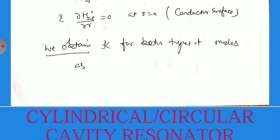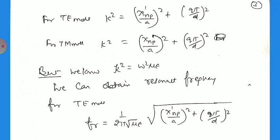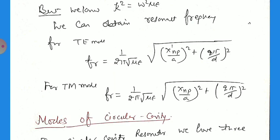We can obtain k for both types of modes. For the TE mode we can write k² equals (x'np/a)² plus (q pi/d)². For the TM mode, k² equals (xnp/a)² plus (q pi/d)². We know that k² equals omega² mu epsilon. So we can obtain the resonant frequency: for TE mode, fr equals 1/(2 pi sqrt(mu epsilon)) times sqrt((x'np/a)² + (q pi/d)²). For TM mode, fr equals 1/(2 pi sqrt(mu epsilon)) times sqrt((xnp/a)² + (q pi/d)²).